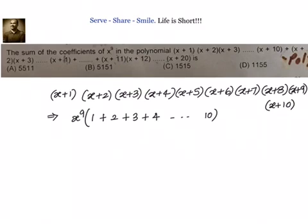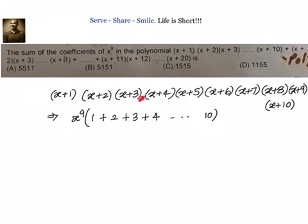Let me explain again. We need the coefficients of x power 9. If we multiply all terms, we get x power 10 — the degree of this polynomial is x power 10. We want x power 9 means what I have to do is multiply all x terms 9 times so that I will have x power 9, then multiply with the constant of the remaining term. So I can take any 9 of these 10 terms and multiply with the other constant term. Suppose other than 3, I have taken all the 9 terms, then I have to multiply with 3. So if you look at x power 9, the coefficients will be 1 plus 2 plus 3 plus 4 up to 10.